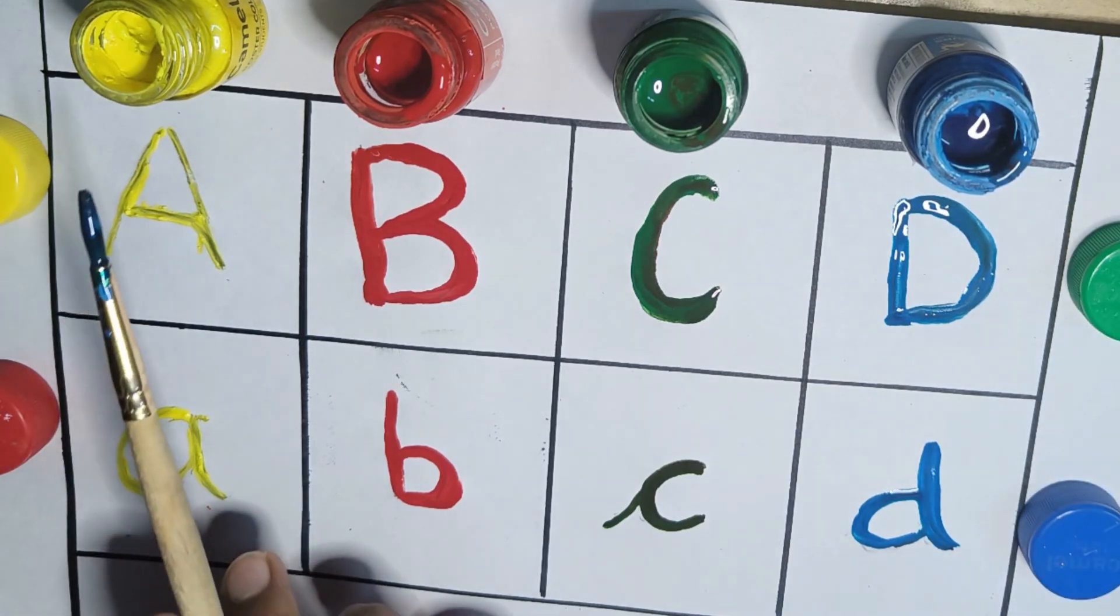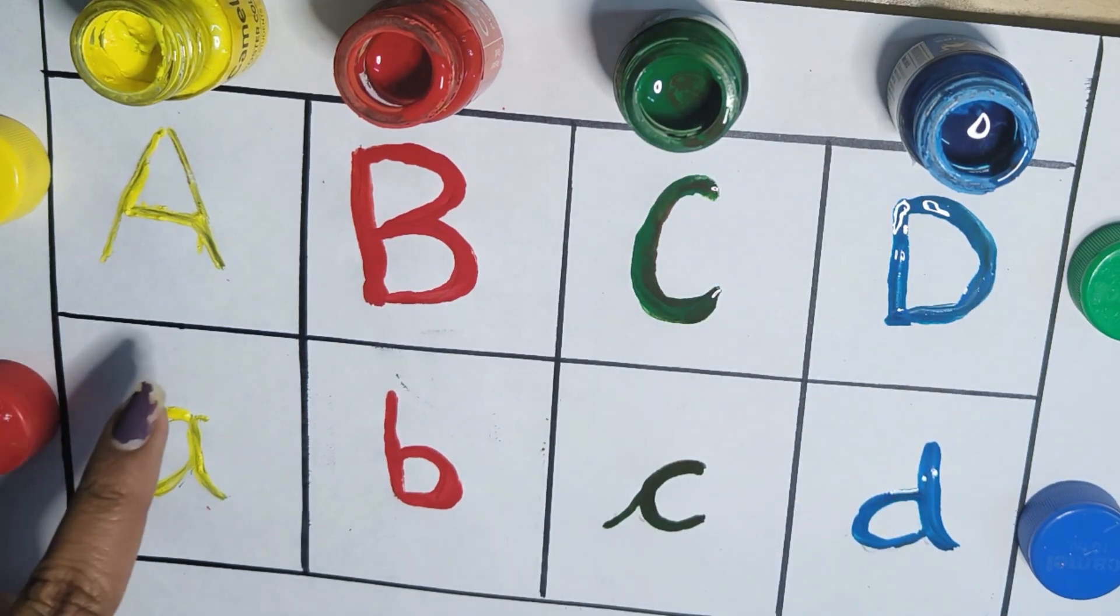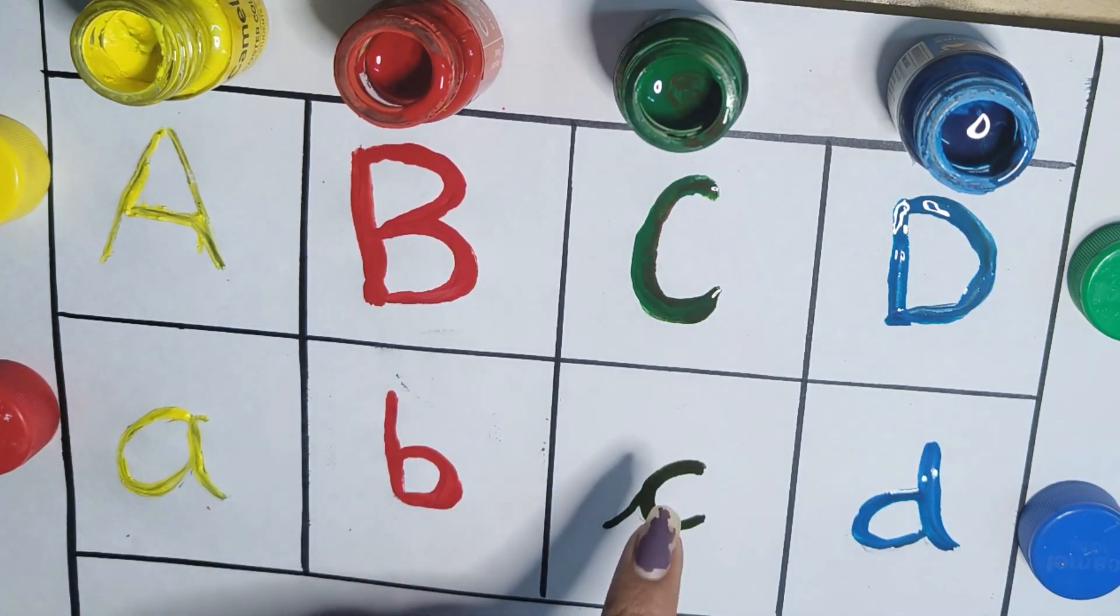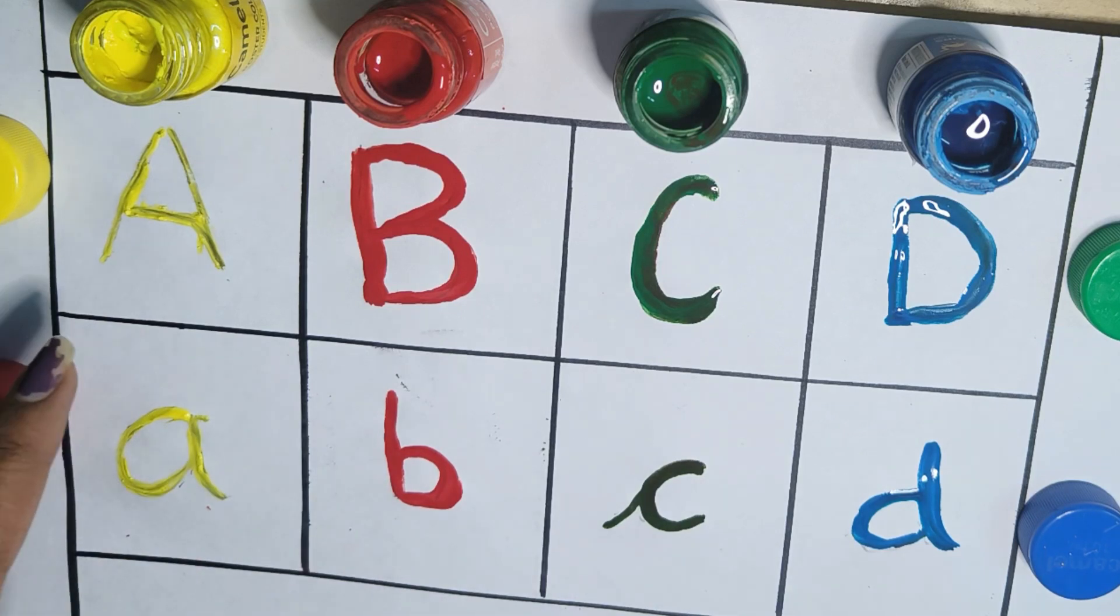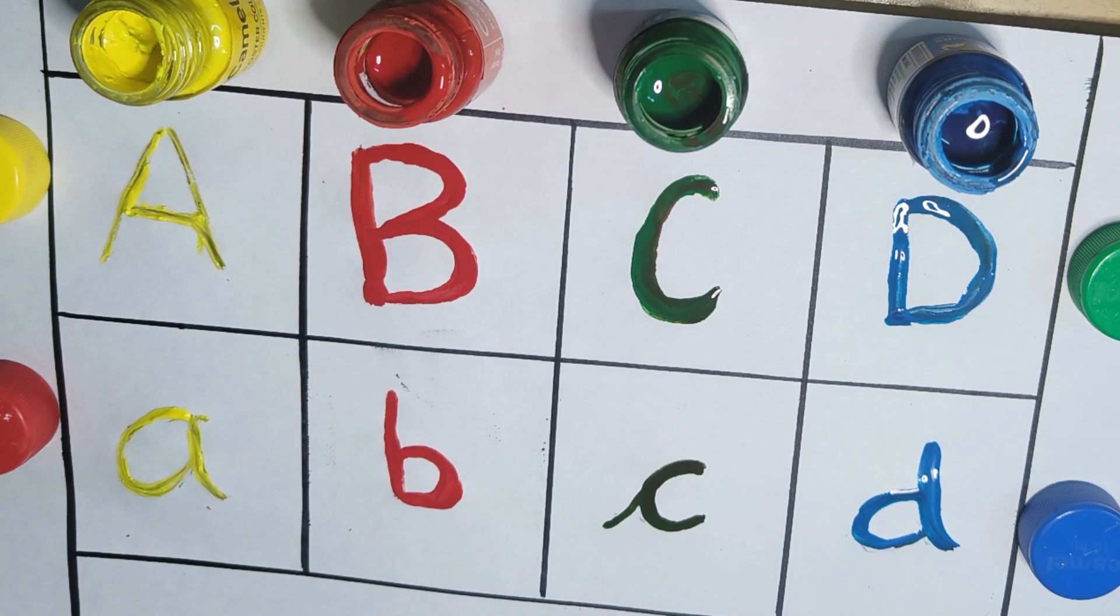So this is yellow, red, green, blue. A, B, C, D. A for apple, B for ball, C for cat, D for dog. That's it.